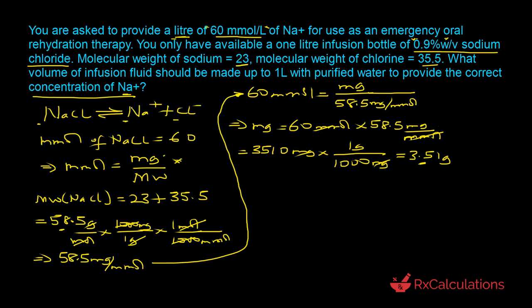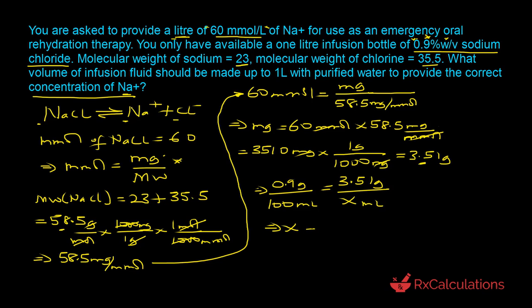Since the sodium chloride is being provided as a solution, we now need to determine what volume of 0.9 percent weight by volume sodium chloride solution will provide 3.51 grams. Setting up a proportion: 0.9 grams per 100 milliliters equals 3.51 grams per x milliliters. Solving for x: x equals 100 milliliters times 3.51 grams divided by 0.9 grams, which equals 390 milliliters.